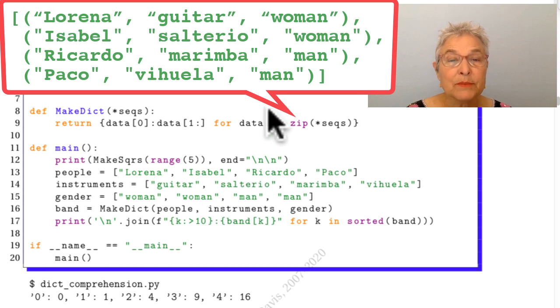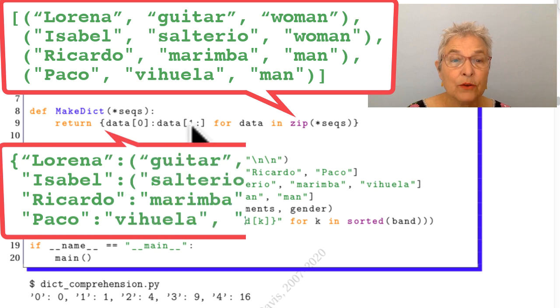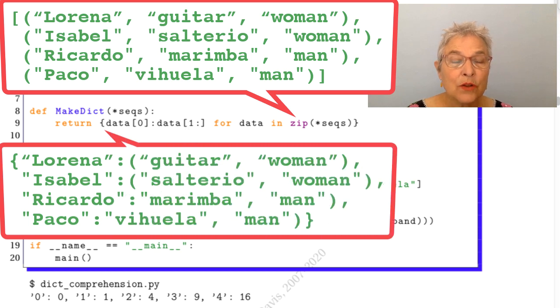So the first tuple comes out as data, and then the first item in that data becomes the key and the rest become the value. So the first one was Lorena, and then the value will be guitar and woman.